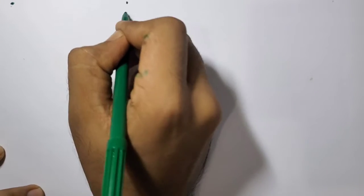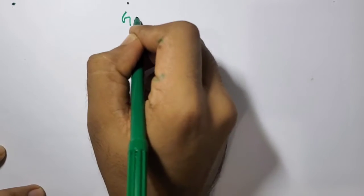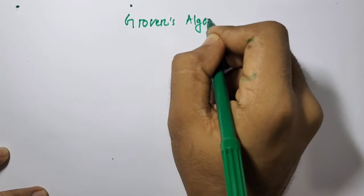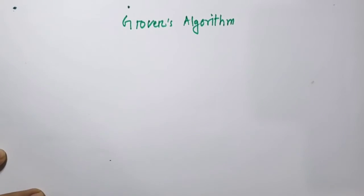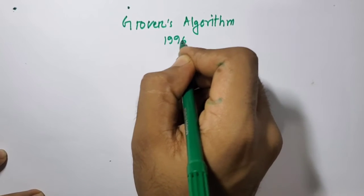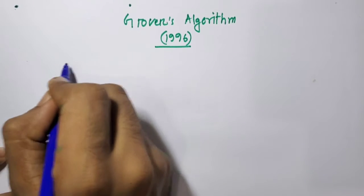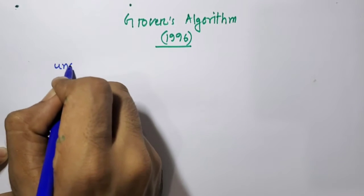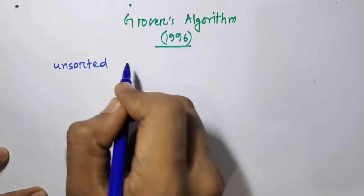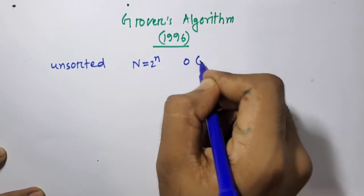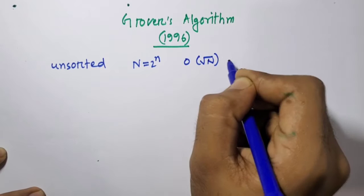Today we will discuss Grover's algorithm. This algorithm is a quantum algorithm which was devised in 1996 by Lov Grover. It is mainly searching an unsorted database of n equals 2 to the power n elements in order of square root of n evaluations.